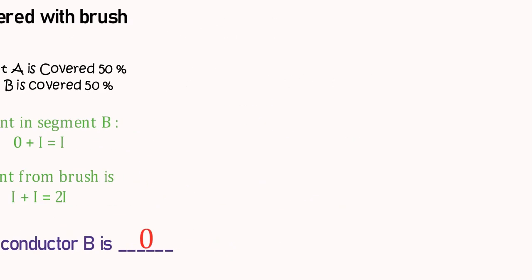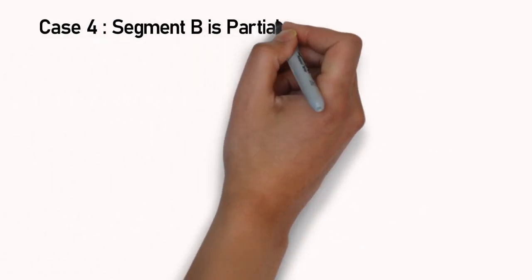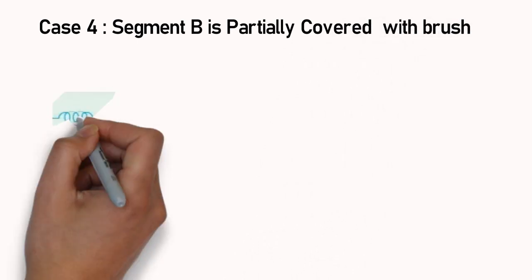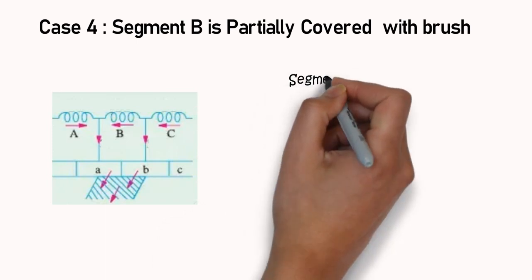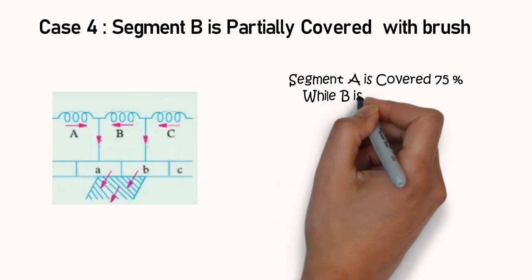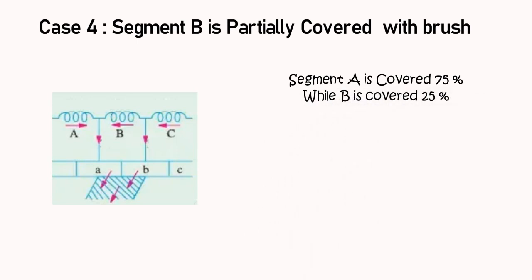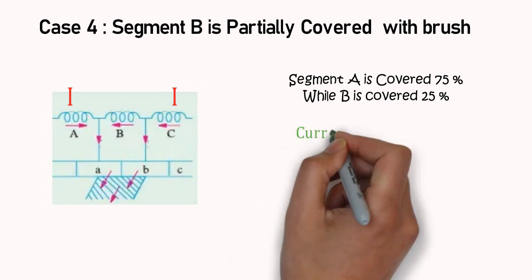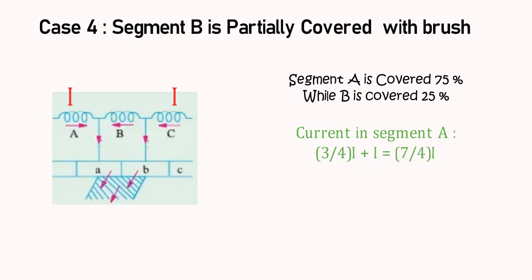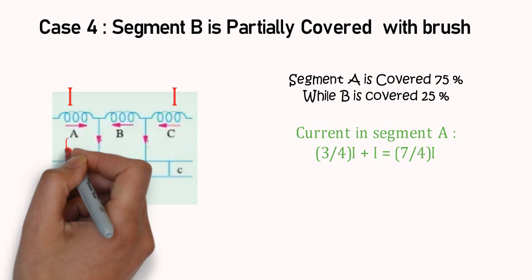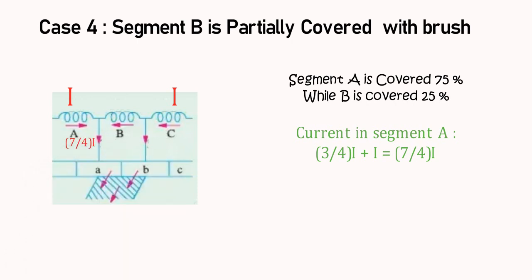Now, in this case, commutator segment B is 25% connected to brush. Hence, 1/4th amount of current will pass through segment B. Here, from coil A and coil C same amount of current I is flowing. Current from coil B and coil A both together will pass through segment A, and that is 7/4th of I. And 3/4th of I is passing through coil B, but direction is reversed as compared to earlier.